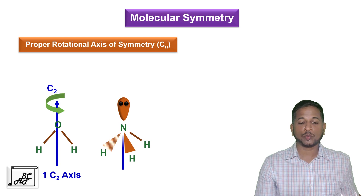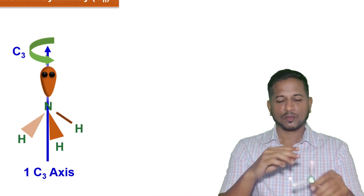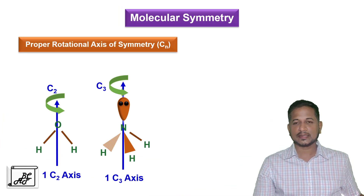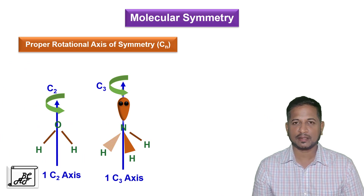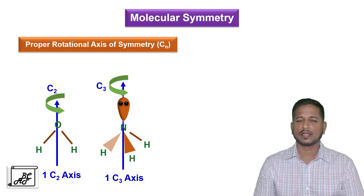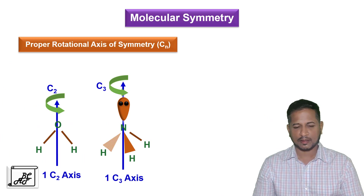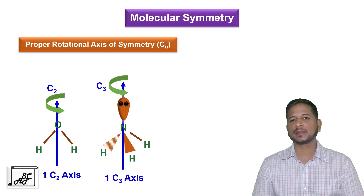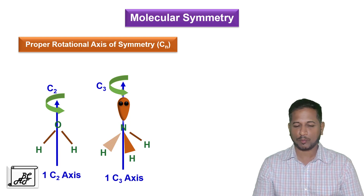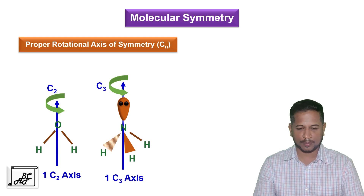Another example is the ammonia molecule. We can see a lone pair at the top and three hydrogen atoms. If we rotate the molecule in this way, we get equivalent images. So this is the C3 rotational axis of symmetry present in the ammonia molecule, the same as in BCl3. However, the C2 axis of symmetry is not present in the ammonia molecule because of the lone pair at the top.